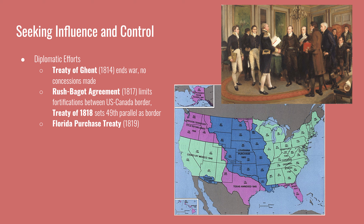In 1819, after Andrew Jackson had driven out the Spanish governor, the U.S. purchased Florida from Spain. The Spanish were struggling to maintain their empire in the Americas and trying to limit revolutions across Mexico and South America. With Mexican independence in 1821, the Spanish were expelled from North America.